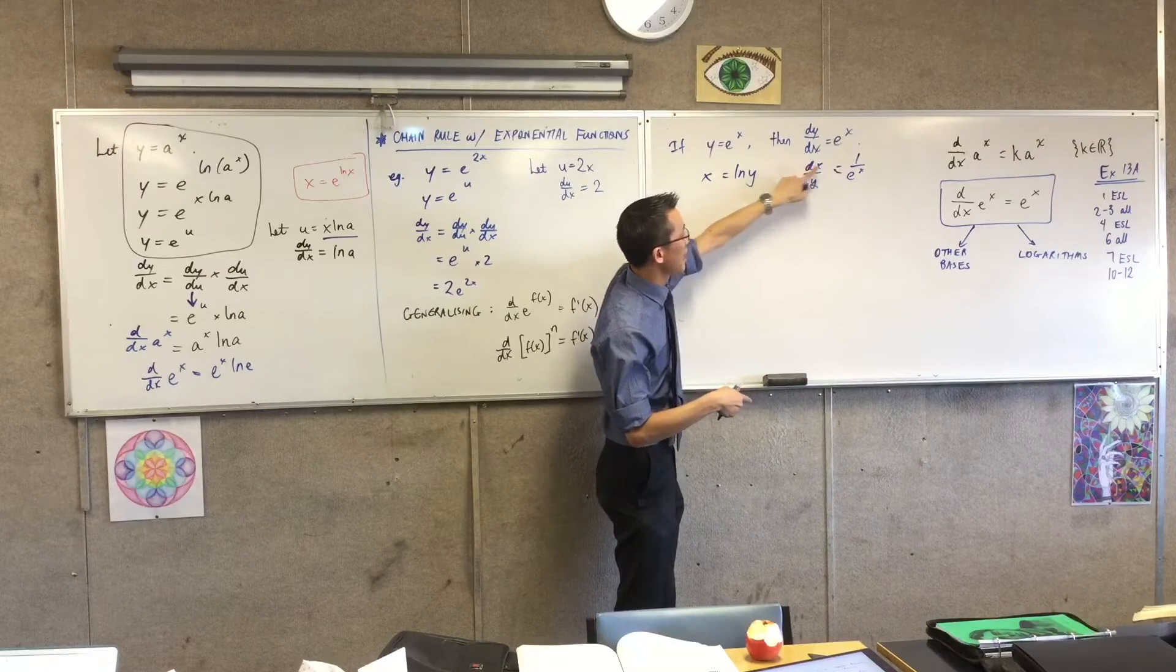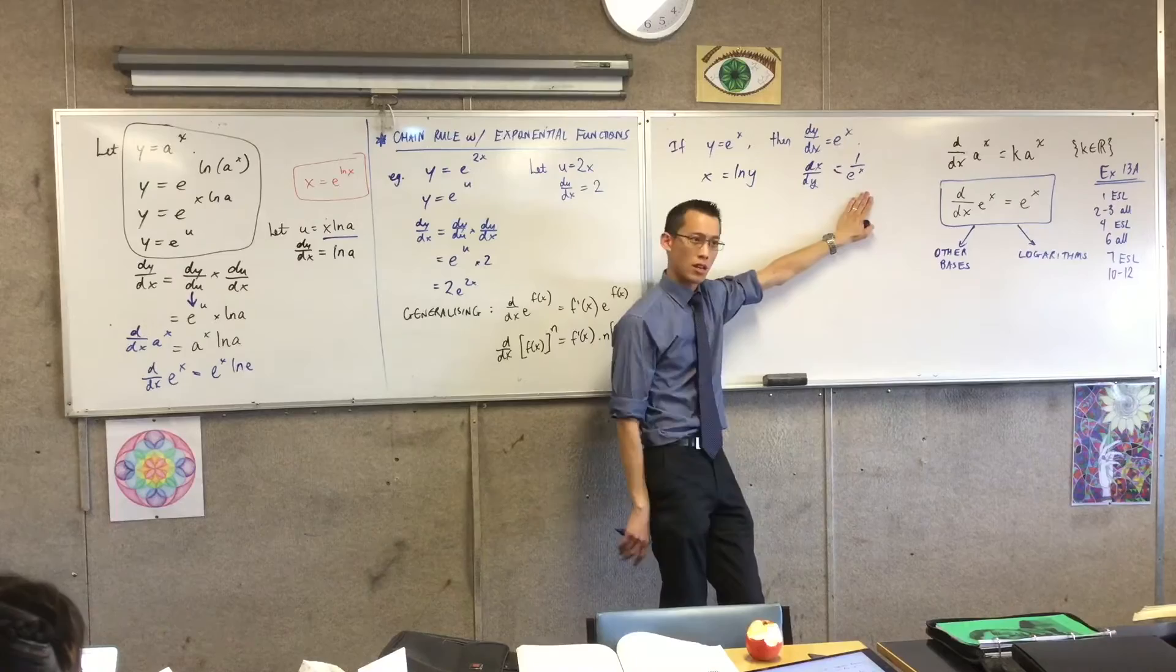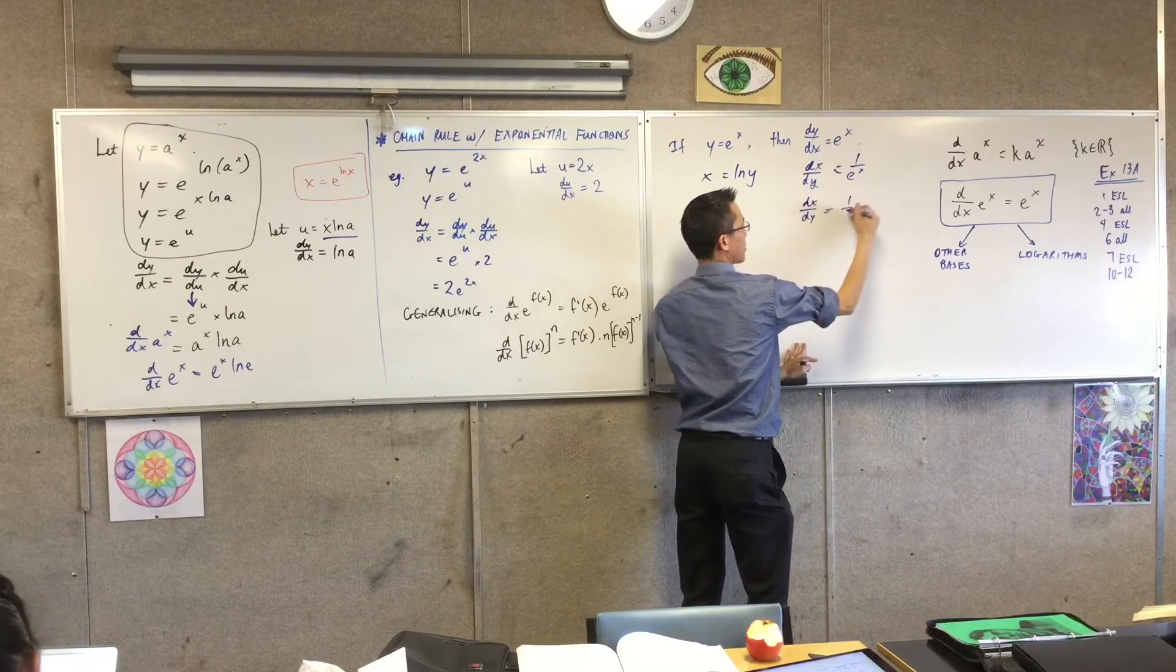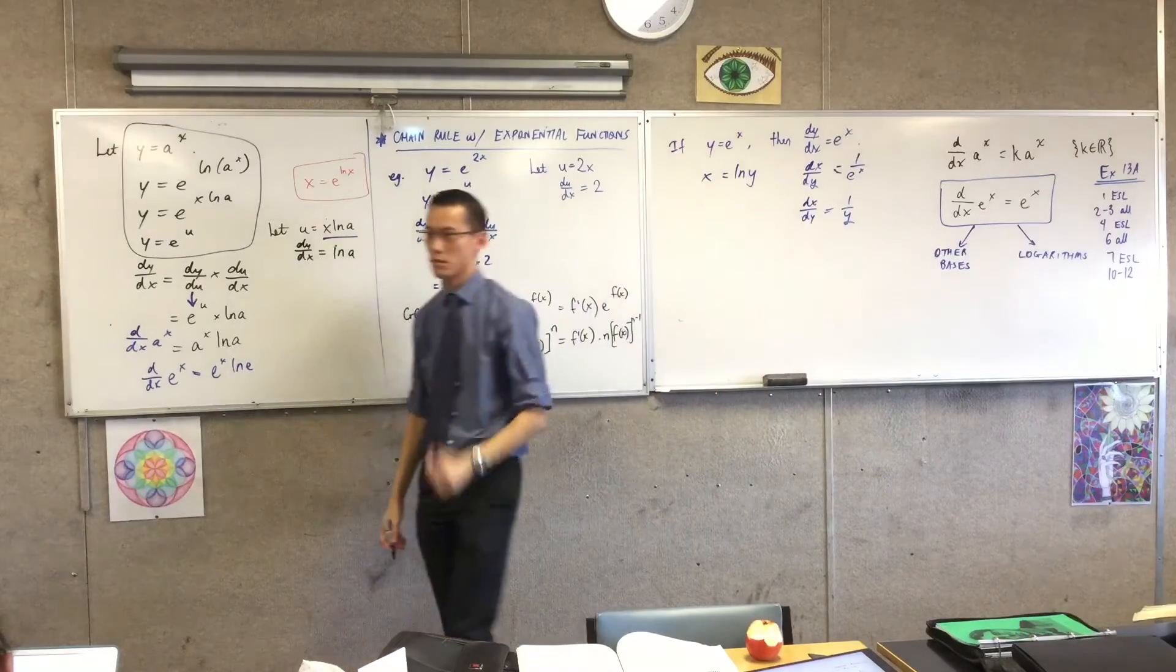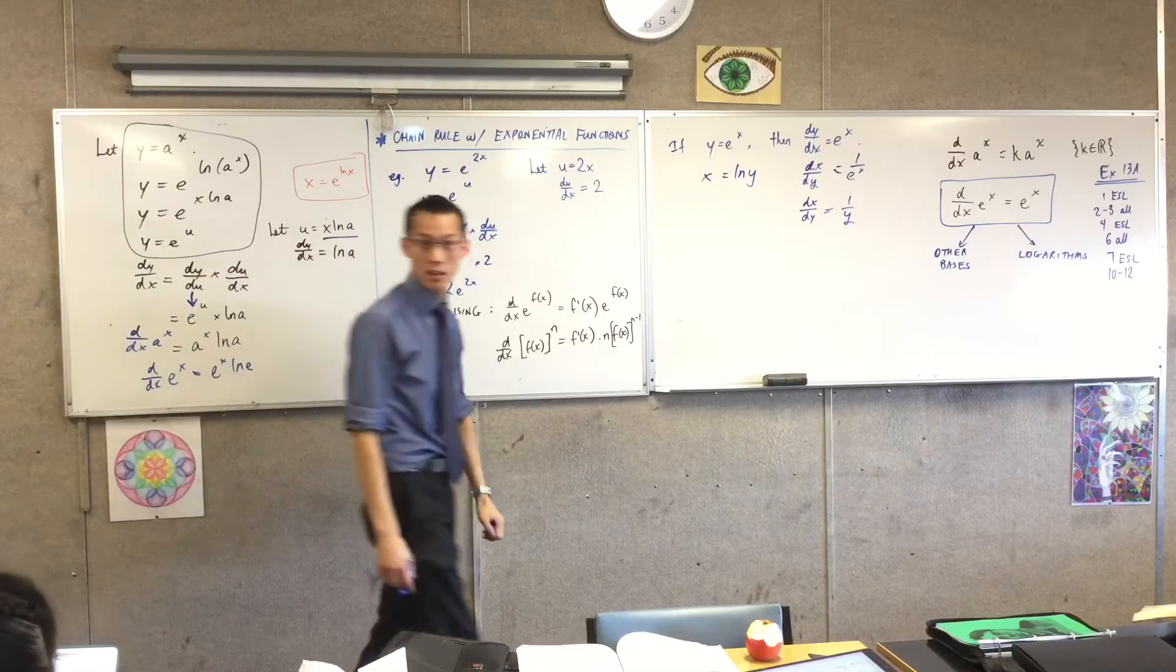This is differentiating that with respect to y. So ordinarily, we would expect this to also be in terms of y. So dx on dy is in fact 1 over y. Do you agree with that? Because e to the x, the first thing I wrote is y equals e to the x. Yeah?